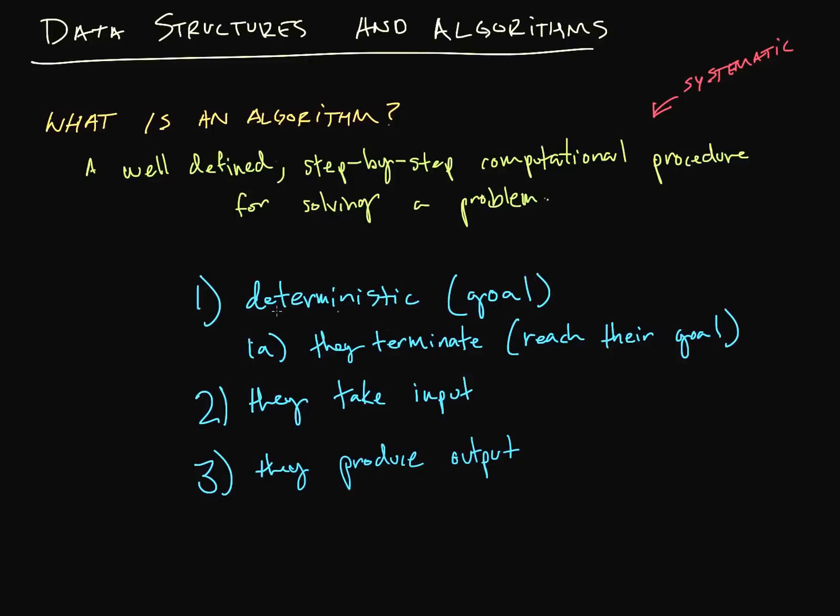So we're deterministic. Our algorithms are deterministic. There's a goal involved. Inherently they terminate because they have to reach their goal, so they have to stop. They also take some sort of an input and they also produce an output.